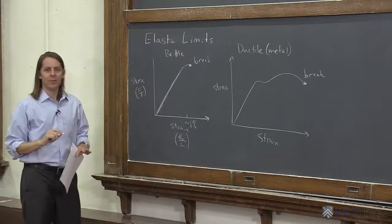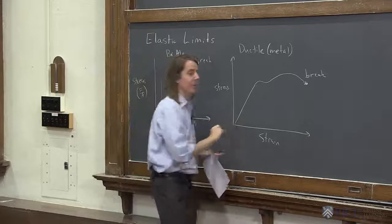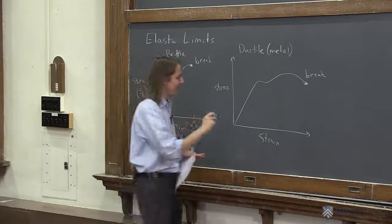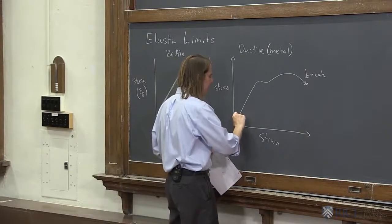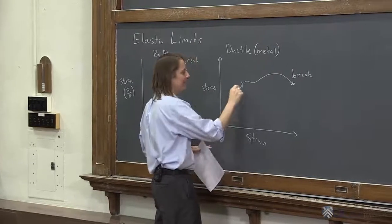What eventually happens is plastic deformation. Eventually, if you go up, you won't come back on the same line, but it still might be straight. So let's imagine this. If you have a metal, you stretch it, you stretch it, you go too far. This is around 1% strain again.